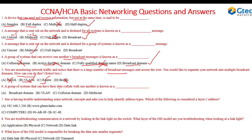Question six: a group of systems that can have their data collide with one another. A collision domain is a scenario where two or more devices transmit data at the same time, leading to a collision, and they will need to resend the data again. So the answer is collision domain.